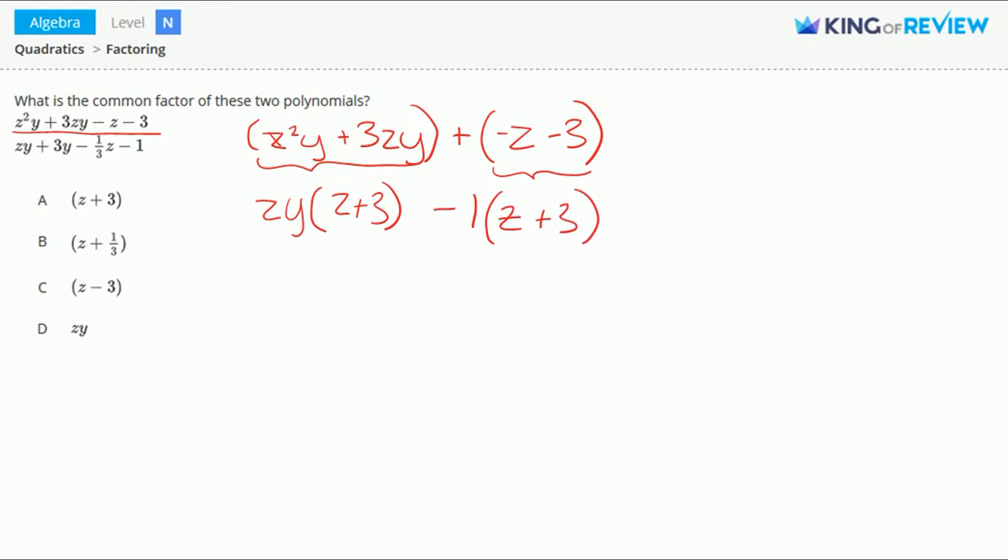You see here, there's a z plus 3 term in the first grouping and a z plus 3 term in the second grouping. This means that we can factor out a z plus 3. This would give us z plus 3 times zy minus 1. Now we're done factoring that first polynomial.